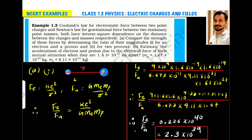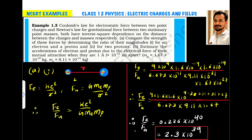On rounding off, removing the last digit, Fe/Fg ≈ 2.3 × 10³⁹.